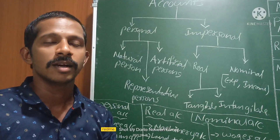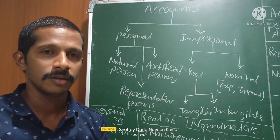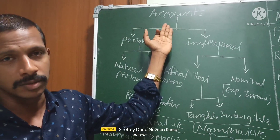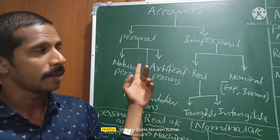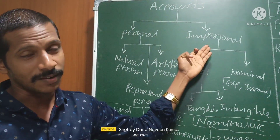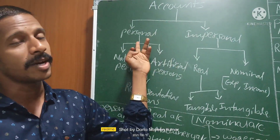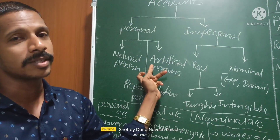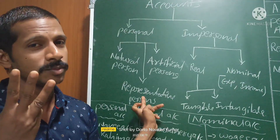Now we will see the classification of accounts — a very important topic for beginners. We should know about the different types of accounts. Accounts are mainly classified into two types: personal account and impersonal account. Personal account is classified into natural persons, artificial persons, and representative persons — three types of persons.